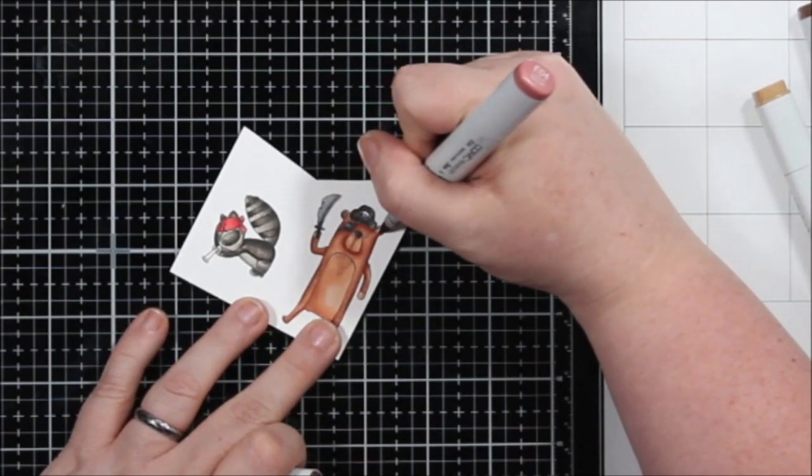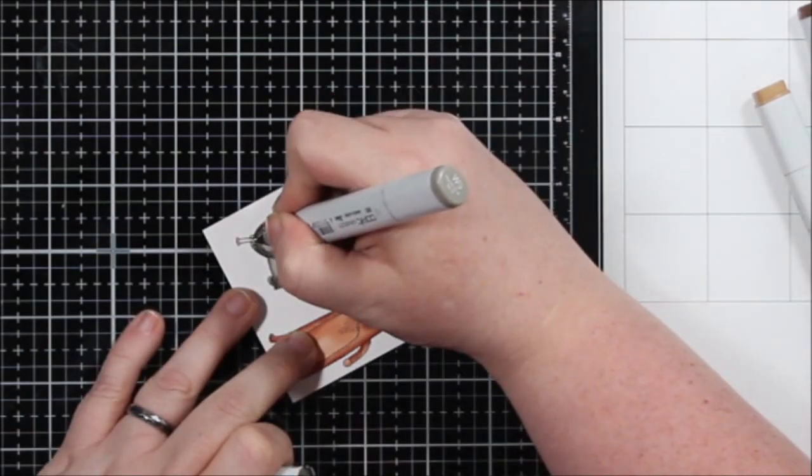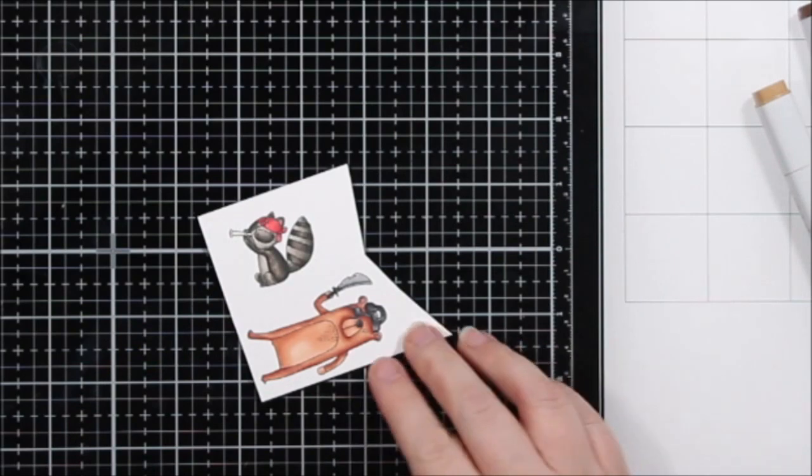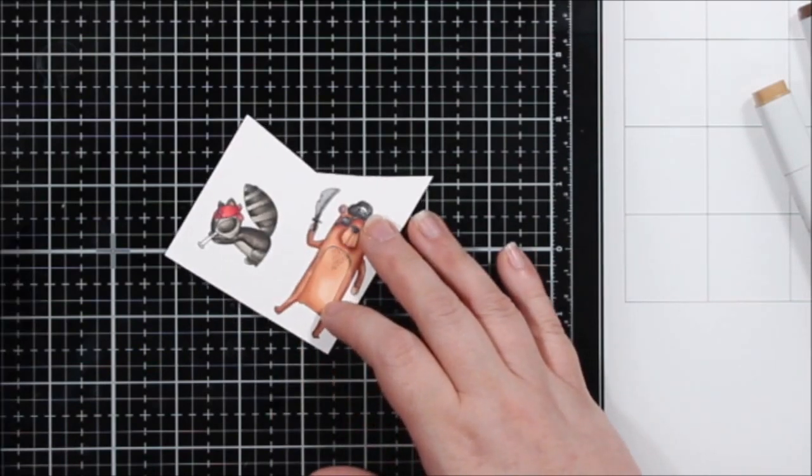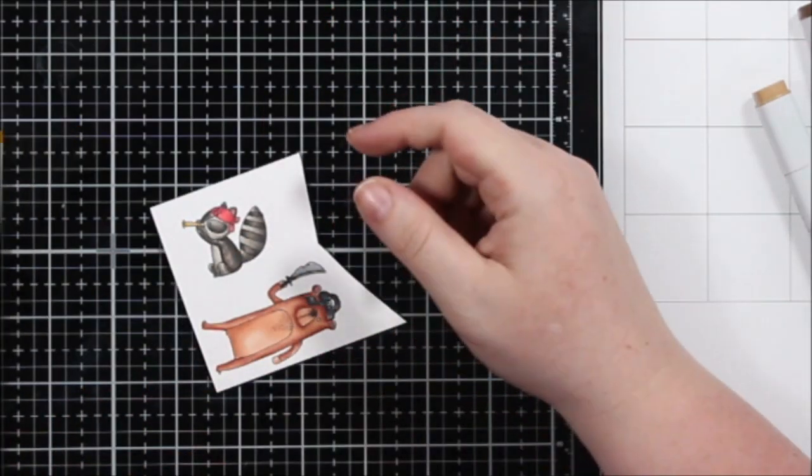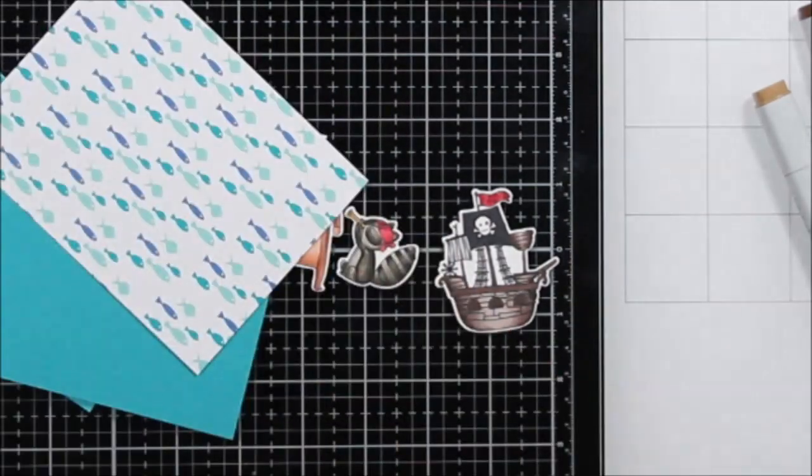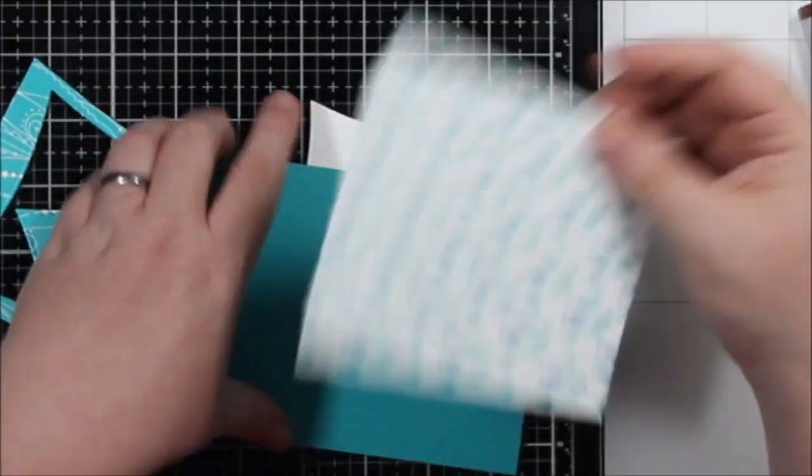And then I'm going to color, I think his little, what is it? It's a looking glass thing. It's the thing that they yell like land ho with. What is that? Is it a spyglass or I don't know. It's a little looker thing. I colored that yellow. I'm telling you, it's been a long day.